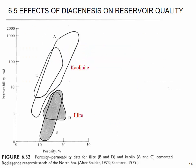Reservoirs with montmorillonite are very susceptible to formation damage if drilled with conventional water-based mud, because it absorbs water and swells. Therefore, it must be drilled with oil-based mud — this is also true for shale drilling. During oil production, water causes the montmorillonite to expand and reduce permeability. When comparing clay types for the same porosity (about 15%), kaolinite gives about 10 mD permeability, while illite gives only about 1 mD.